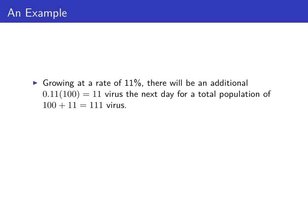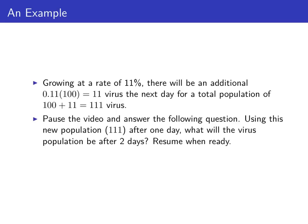If we have 100 virus and the growth rate is 11 percent, there will be an additional 11 percent of 100, or 11 virus, the next day. Add that to the original 100 virus and we'd end up with 111 virus after day one. Now we have 111 virus, so pause the video and answer the same kind of question.